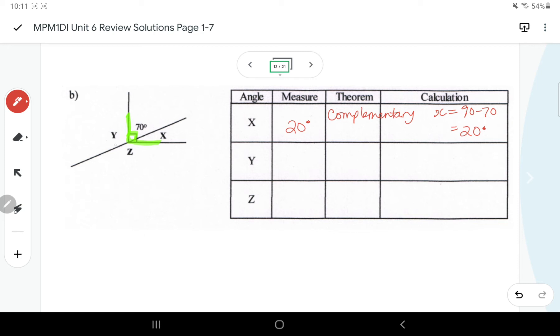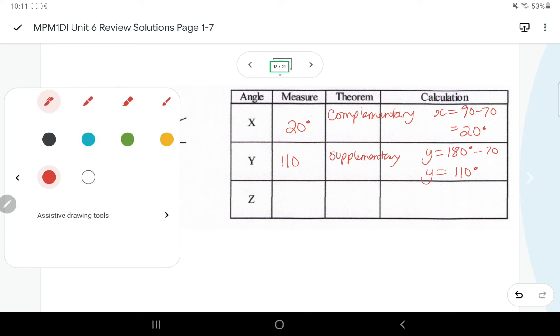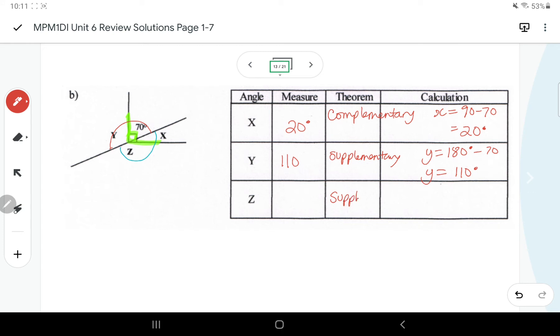And then Y is supplementary with the 70, so Y is 180 minus 70, so Y would be 110 degrees. And Z is supplementary again, but Z is supplementary with the X which was 20, so Z is 180 minus 20, which is 160 degrees.